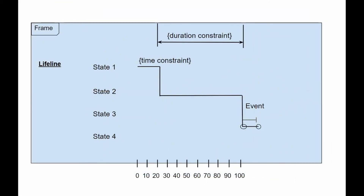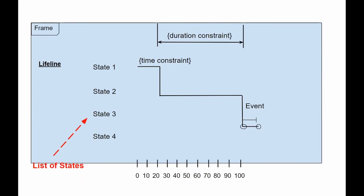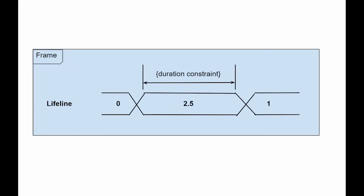The state lifeline indicates the change of state of an element over time. The x-axis displays elapsed time in any selected units, while the y-axis is marked with a list of states. The value lifeline illustrates the change of elements of value over time. The x-axis displays elapsed time in any selected units, similar to the state lifeline. The value is written between a pair of horizontal lines that intersect each time the value changes.